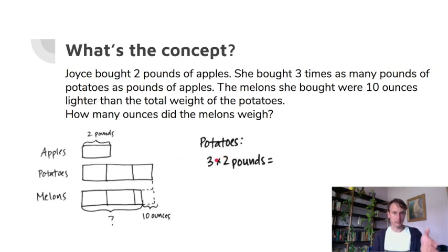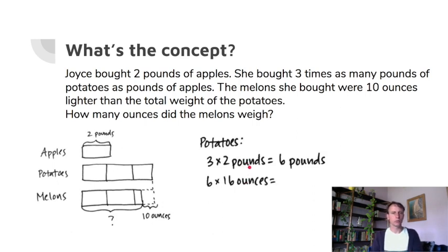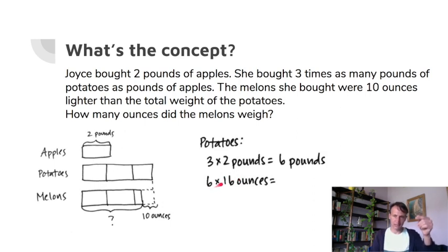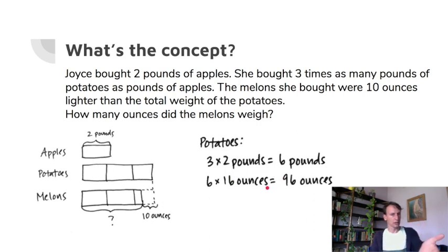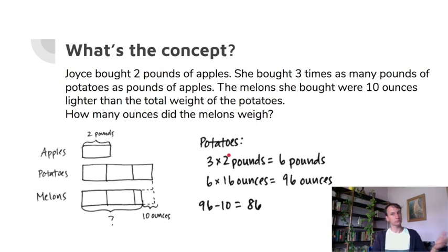Since the final answer must be in ounces, convert six pounds now: six times 16. Six times ten is 60; six times six is 36; 60 plus 36 is 96 ounces. The melons are 10 ounces less than the potatoes, so 96 minus 10 equals 86 ounces. That's our final answer.